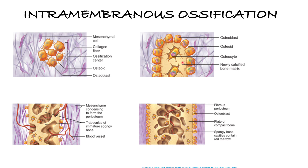In the second step, the osteoblasts continue to secrete an osteoid — something that looks like bone but isn't quite yet — and it will calcify within a few days. Another phenomenon that occurs is that the osteoblasts get trapped with nowhere to go, which prompts them to become mature. They then develop into osteocytes, which are mature bone cells — those spiky cells you see here.